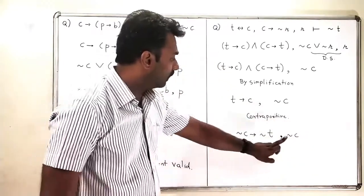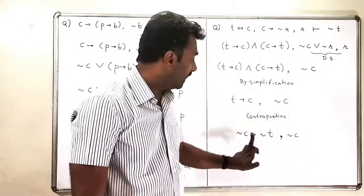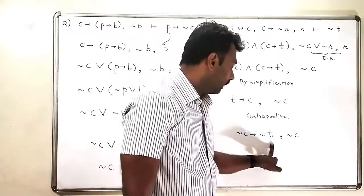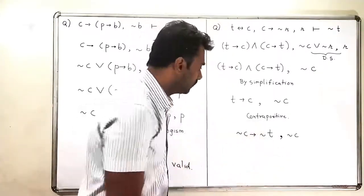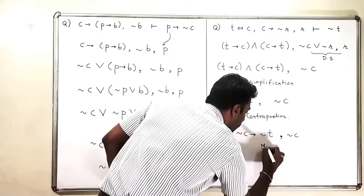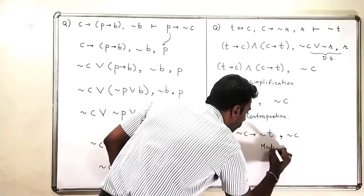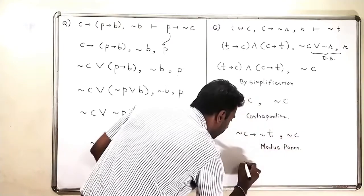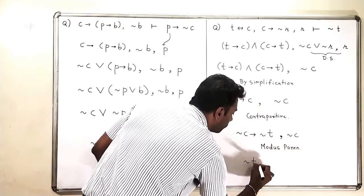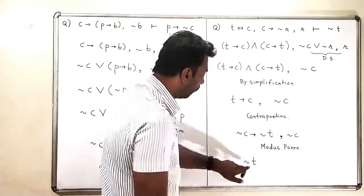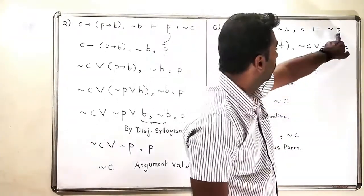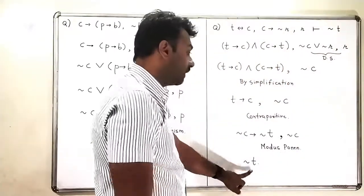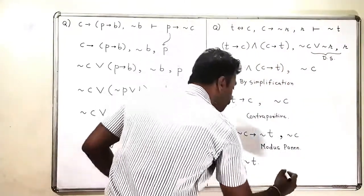Now I have negation C and negation C implies negation T. By modus ponens, I get negation T, which is our expected conclusion. So the second argument is also valid.